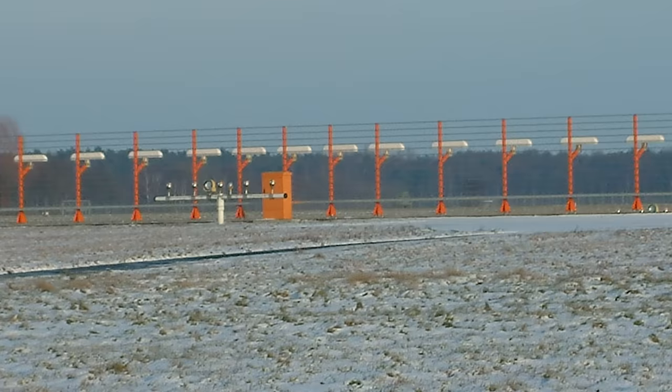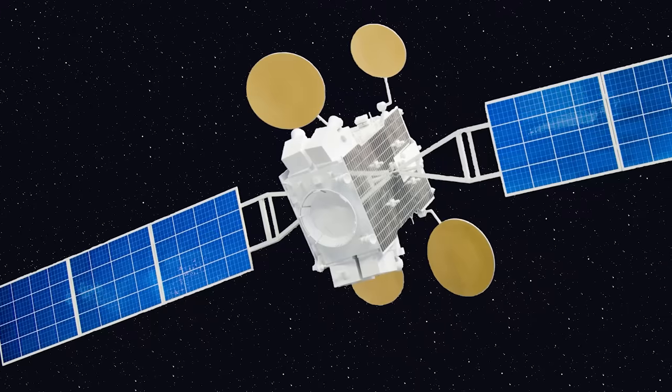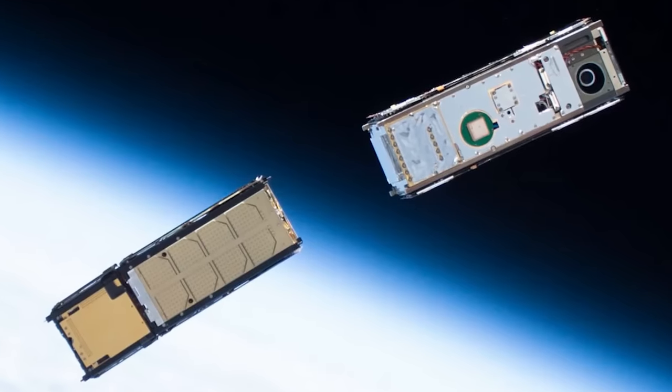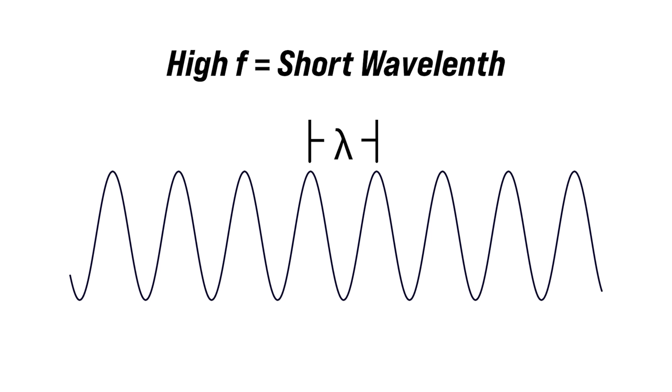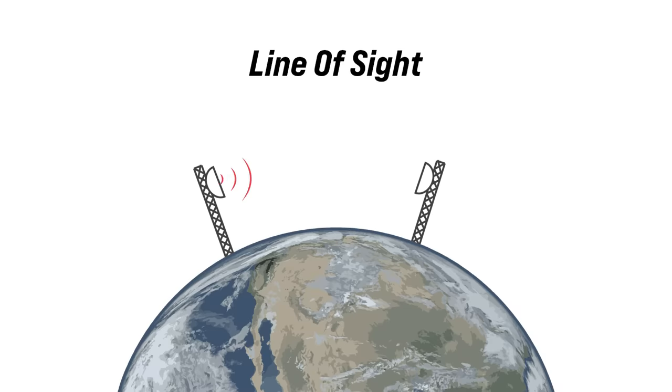Antennas are all around us. We use them to transmit and receive things like music, communicate with aircraft — they're used in guidance systems, GPS, satellite comms, cell phones, and IoT devices, to name a few applications. Those applications all operate on specific frequencies within the RF spectrum, and that frequency dictates the physical size of the antenna and its propagation characteristics. The lower the frequency, the longer the wavelength; the higher the frequency, the shorter the wavelength.